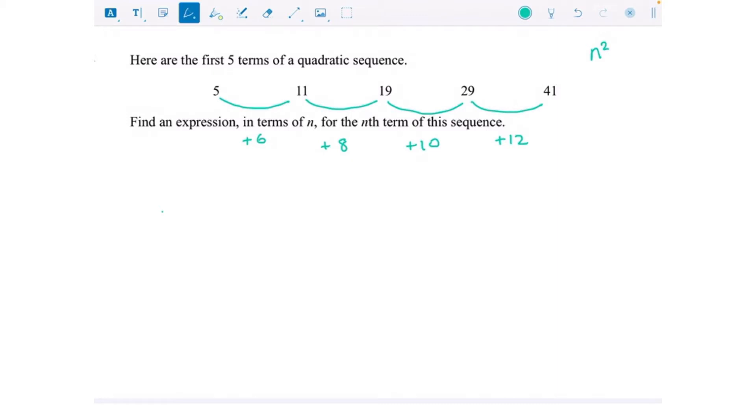We're going to do the difference of those numbers. So from 6 to 8 that's up 2, from 8 to 10 that's up 2, and from 10 to 12 that's up 2. That number should be the same, and whatever that number is you are going to half it. So divide that by 2 and that gives us 1n squared.